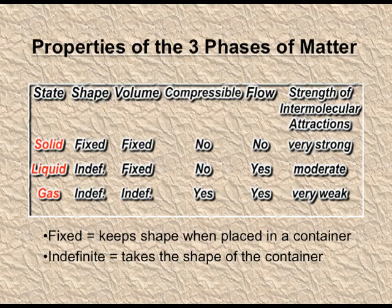Just because of this free movement in the gaseous and liquid states, there is a property known as fluidity. Fluidity means liquids can flow and even gases can flow. Solids, because of restricted movement, cannot flow. Comparing the three states: solids have a fixed shape, but liquids and gases have an indefinite shape.